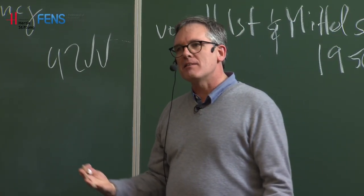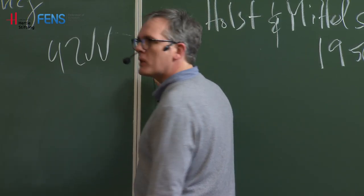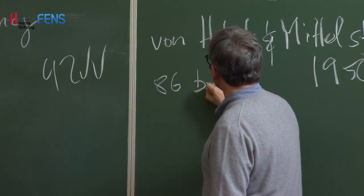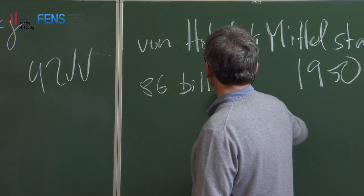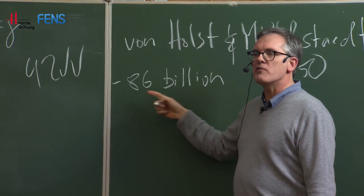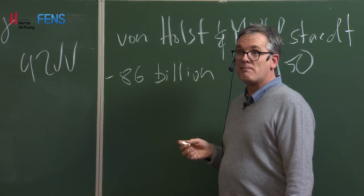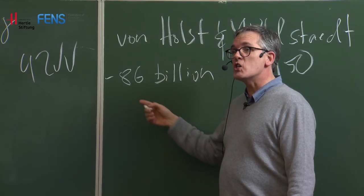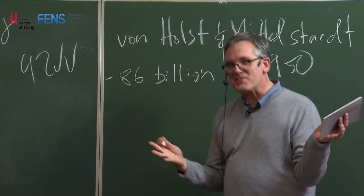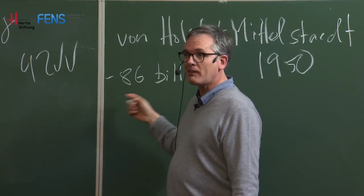So how are we going to estimate this? Let's start with total number. Where does the 86 billion number come from? That's a big number among friends. How many stars are there in the Milky Way galaxy? They estimate 100 to 200 billion - actually much more. So the brain has on the same order of magnitude as stars in the galaxy.